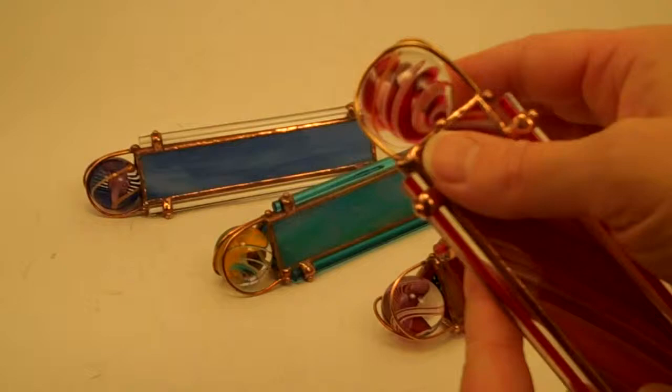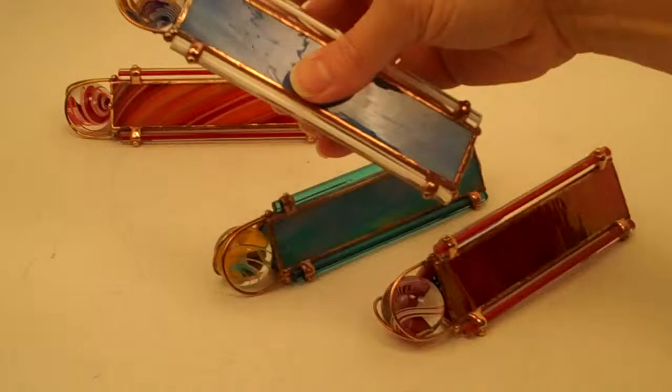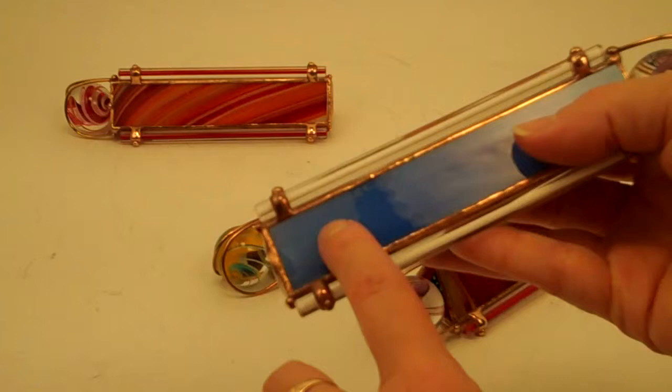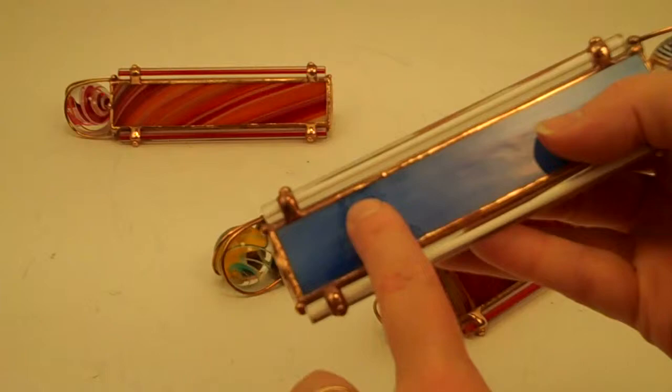Now the marbles that Sue selects are from Jody Fine. She orders marbles from Jody Fine Studios and then selects the glass to go with it. And when Sue is done with the kaleidoscope she does sign it here by etching directly into the glass. Sue Rio 2012.